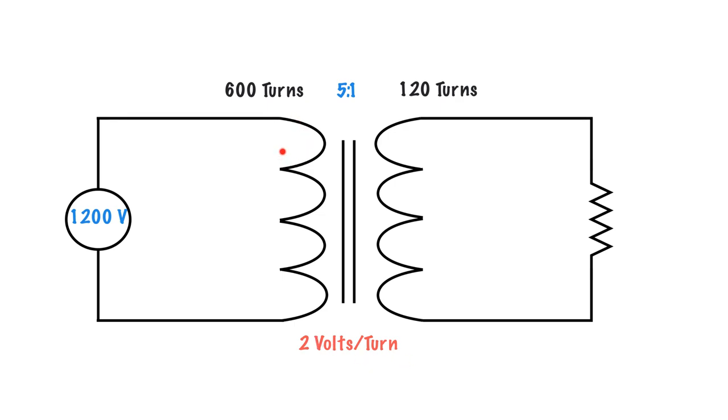For every turn on the primary winding, I have 2 volts impressed across it. Now the nice thing about transformers is whatever my volts per turn are on my primary side, will also be the volts per turn on the secondary side because they're sharing the same magnetic circuit.